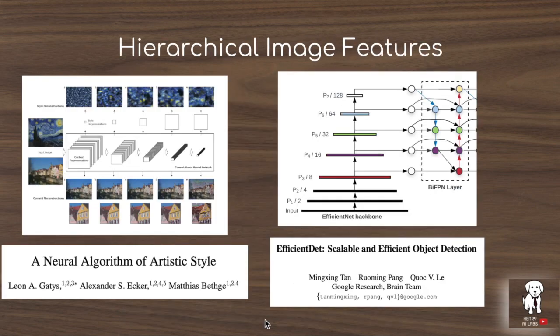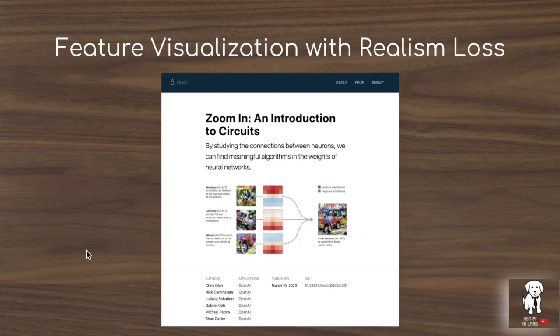This paper explores the use of hierarchical image features that arise from sequential convolutional neural networks, which have been explored in other papers as well. A neural algorithm of artistic style — the original neural style transfer paper — shows that you can separate style and content by optimizing for matching features throughout different layers of the neural network. Modern object detection networks also utilize features hierarchically processed through image classifiers like EfficientNet, blending them into the features used to train detection models.